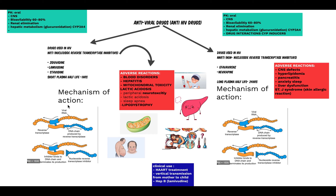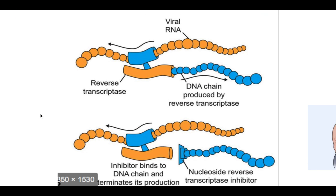Now let's jump into the mechanism of action of NRTIs. HIV works via viral RNA, which has to be converted into DNA in order to function. NRTIs — Nucleoside Reverse Transcriptase Inhibitors — block the reverse transcriptase enzyme, so RNA cannot be converted into DNA and full functional viral DNA is not produced. NRTIs work by a competitive mechanism.